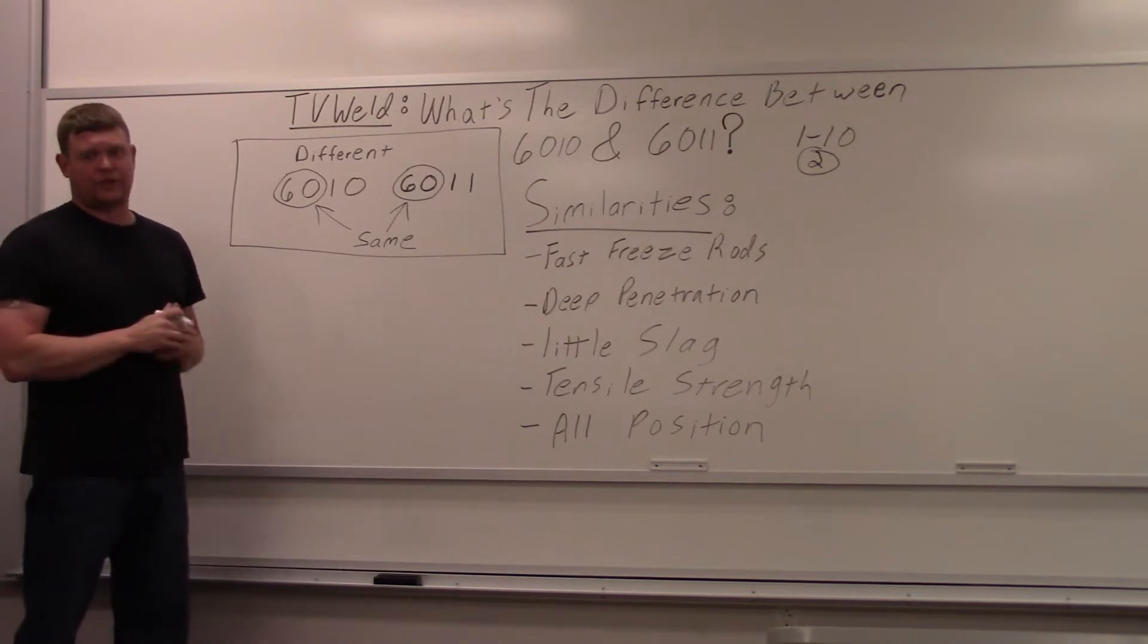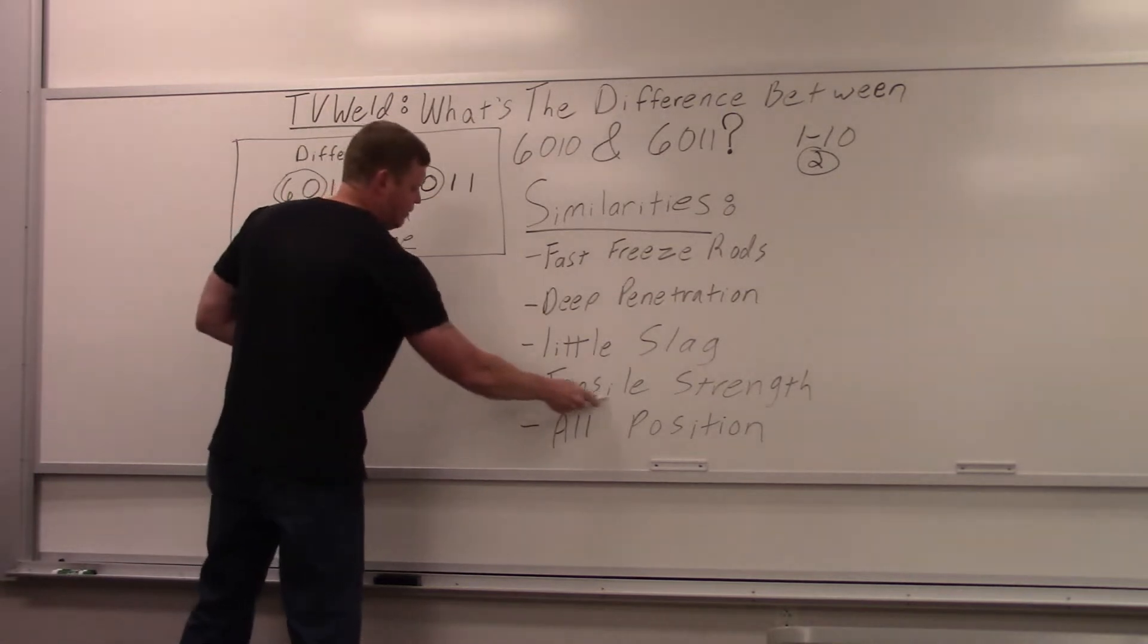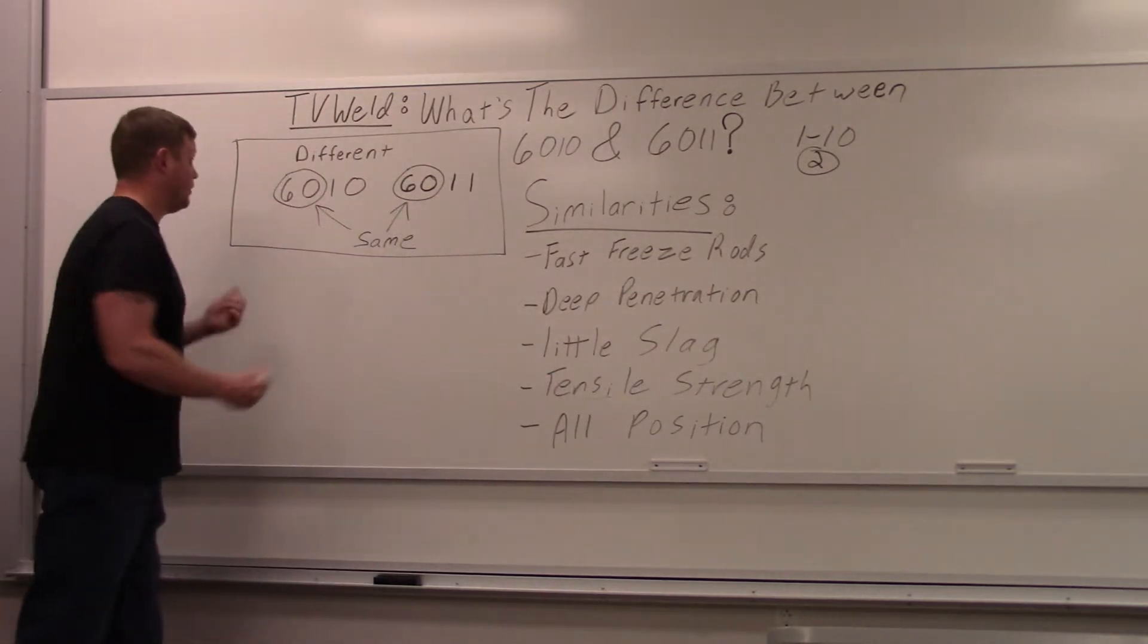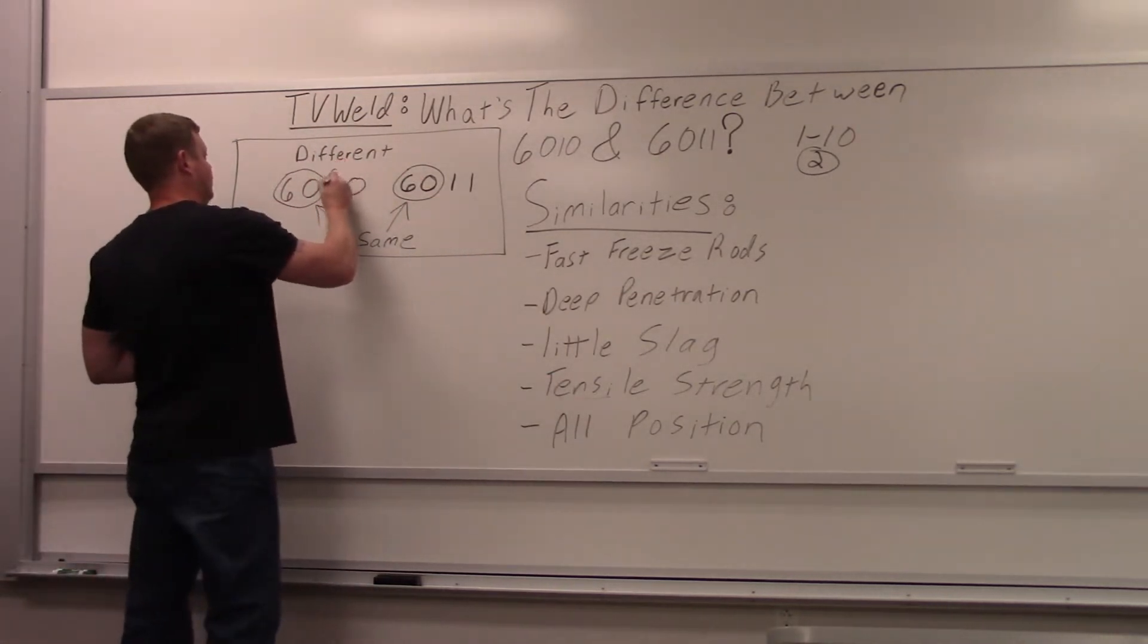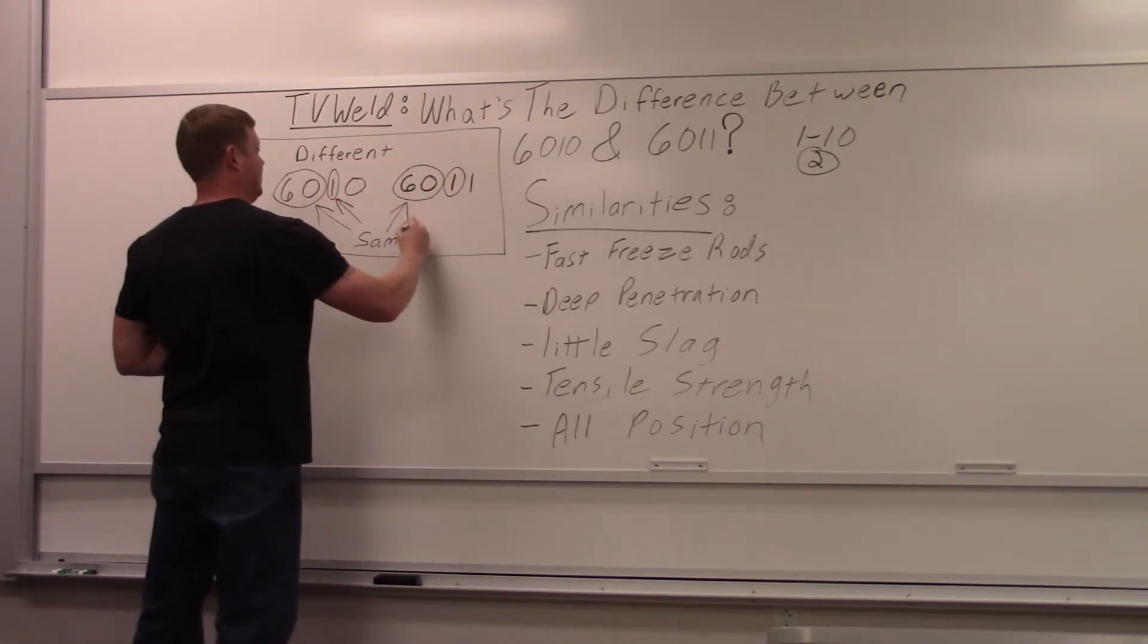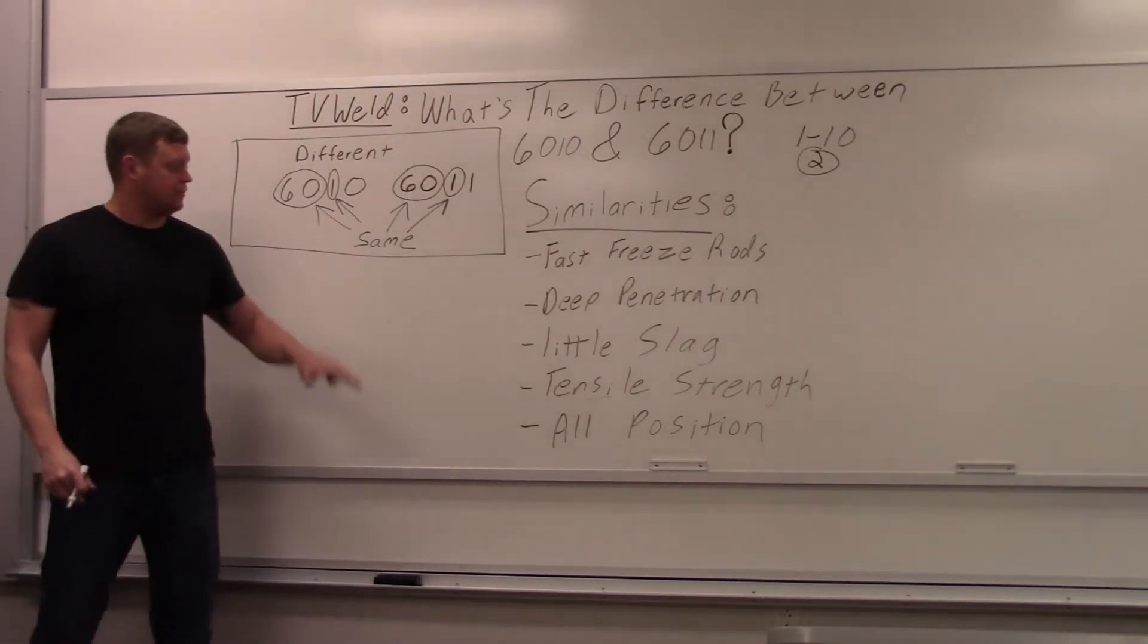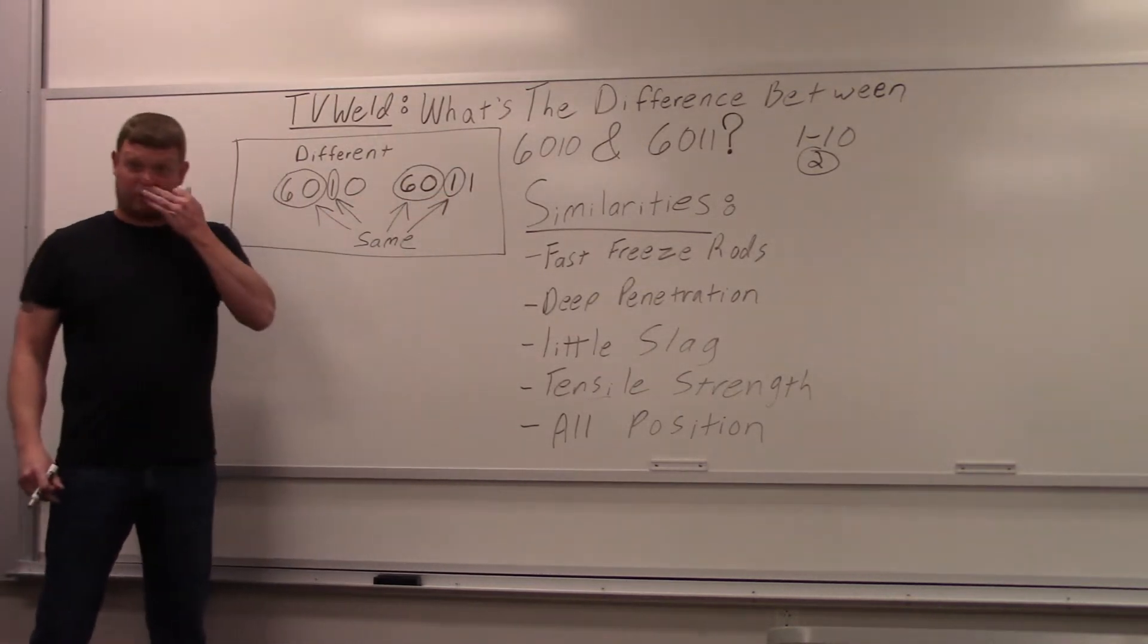What does 60 mean? It's tensile strength. 60,000 pounds per square inch minimal tensile strength. Right here. I got it written. The next designation is a 1. We'll do another circle around that because, again, it's the same. The third number is position, all position rods, so both of them are all positions.